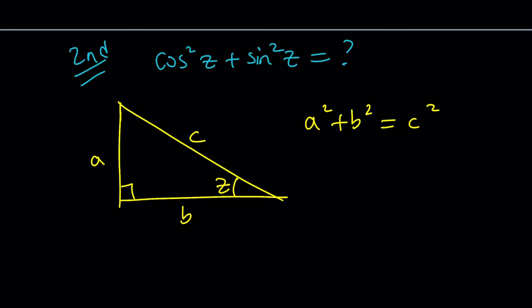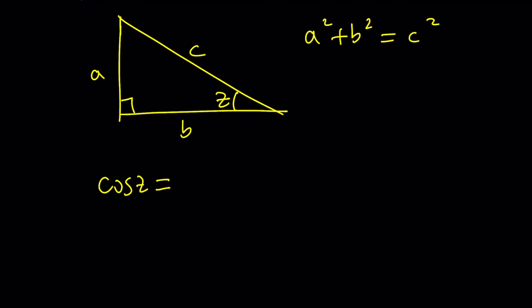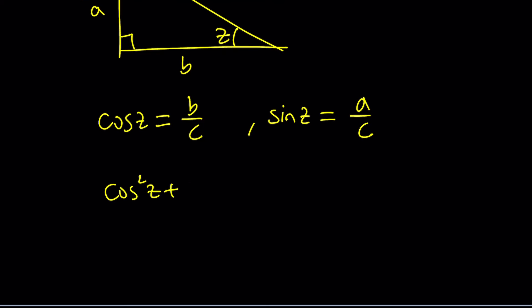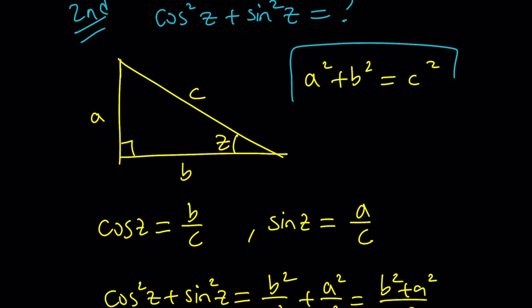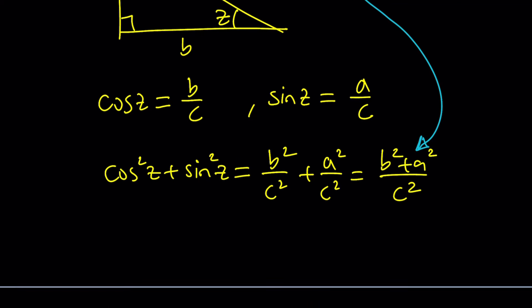That gives you (b² + a²) / c². Since we know from the Pythagorean theorem that a² + b² = c², we can replace b² + a² with c², giving c²/c², which equals 1 — the same result as before. This is a very well-known and super helpful identity when dealing with trigonometry.